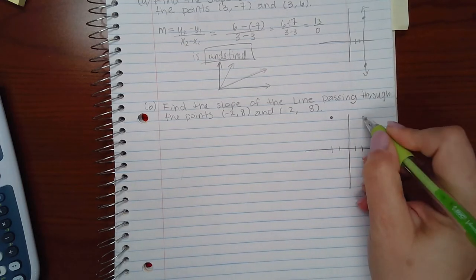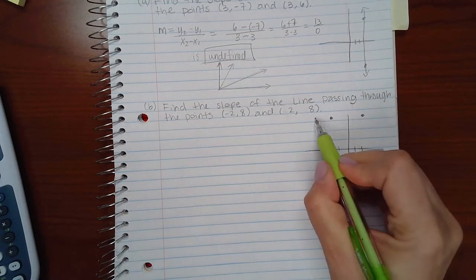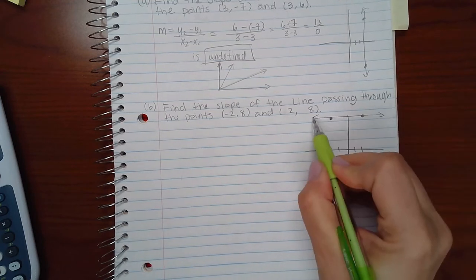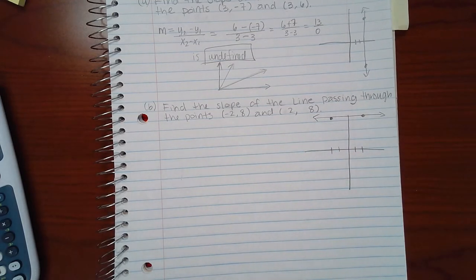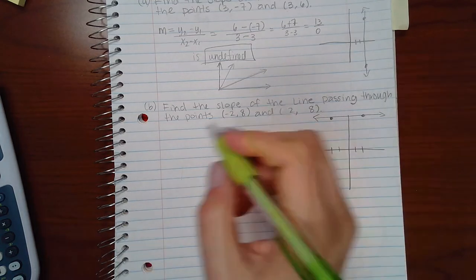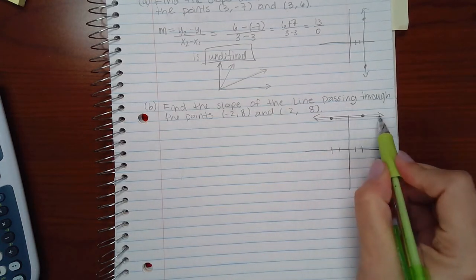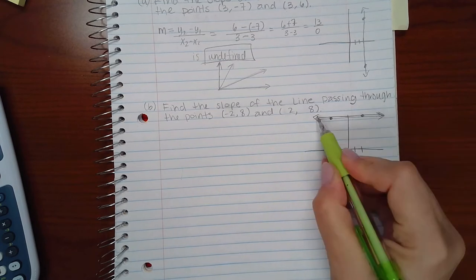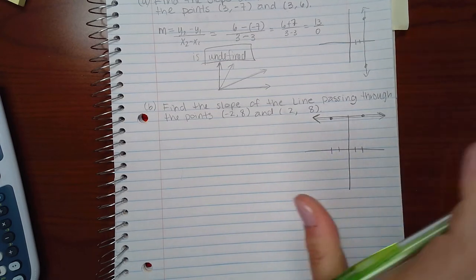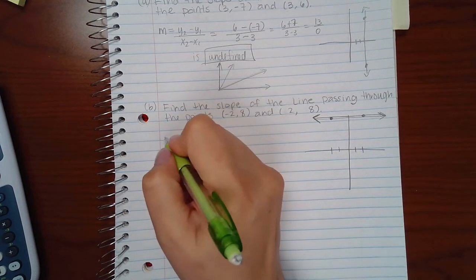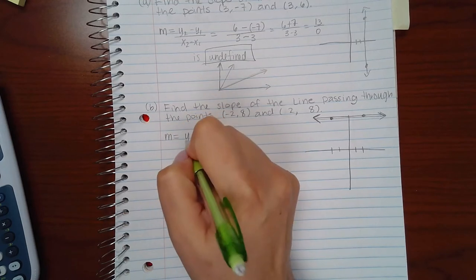And positive two and eight is going to be somewhere up there. If I connect the dots I end up with a horizontal line. If you have a horizontal line, notice that it's a flat line and therefore intuitively your slope should be zero because there's no incline at all.